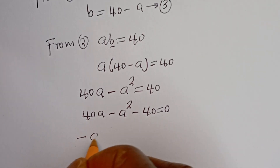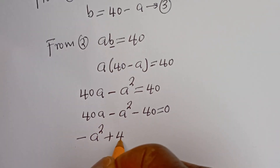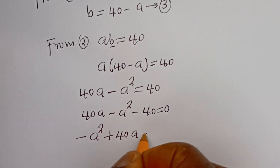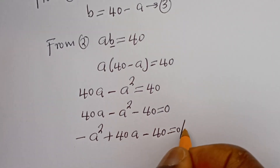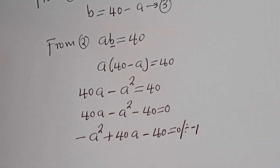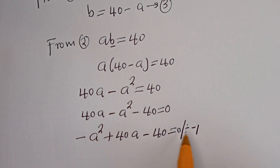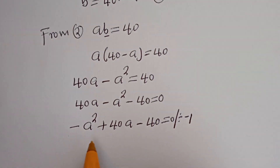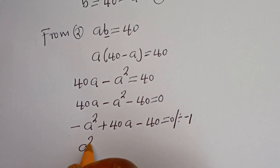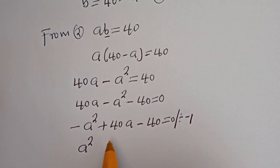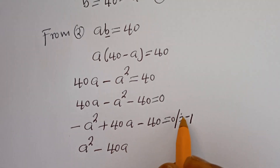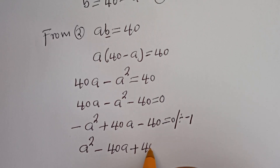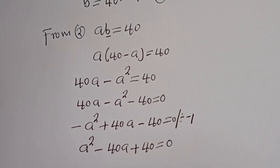This gives minus A squared plus 40A minus 40 is equal to 0. Dividing all through by minus 1: A squared minus 40A plus 40 is equal to 0.